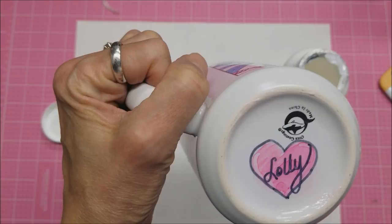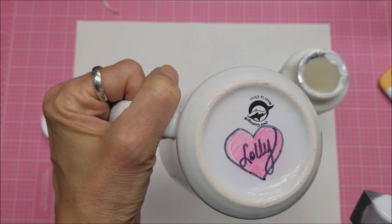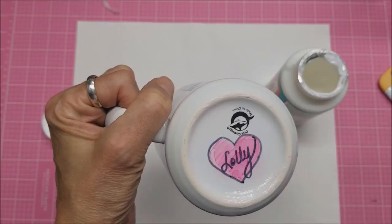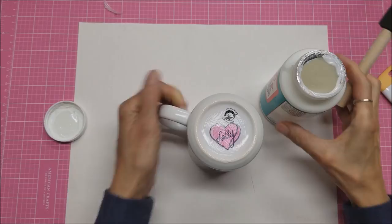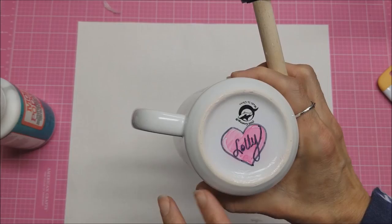All I need to do is let that dry for one to two hours and then recoat it again. Then I can let it dry one to two hours again, recoat it again if I wish. And then at that point it needs to cure for 28 days before actually putting it in the dishwasher.